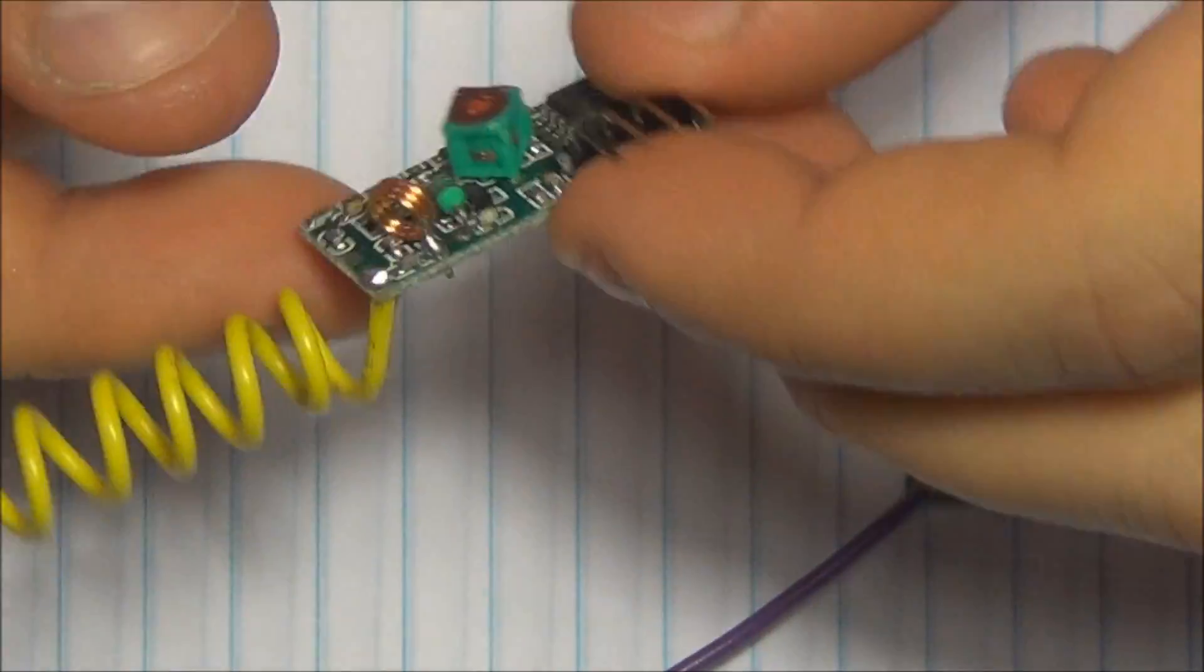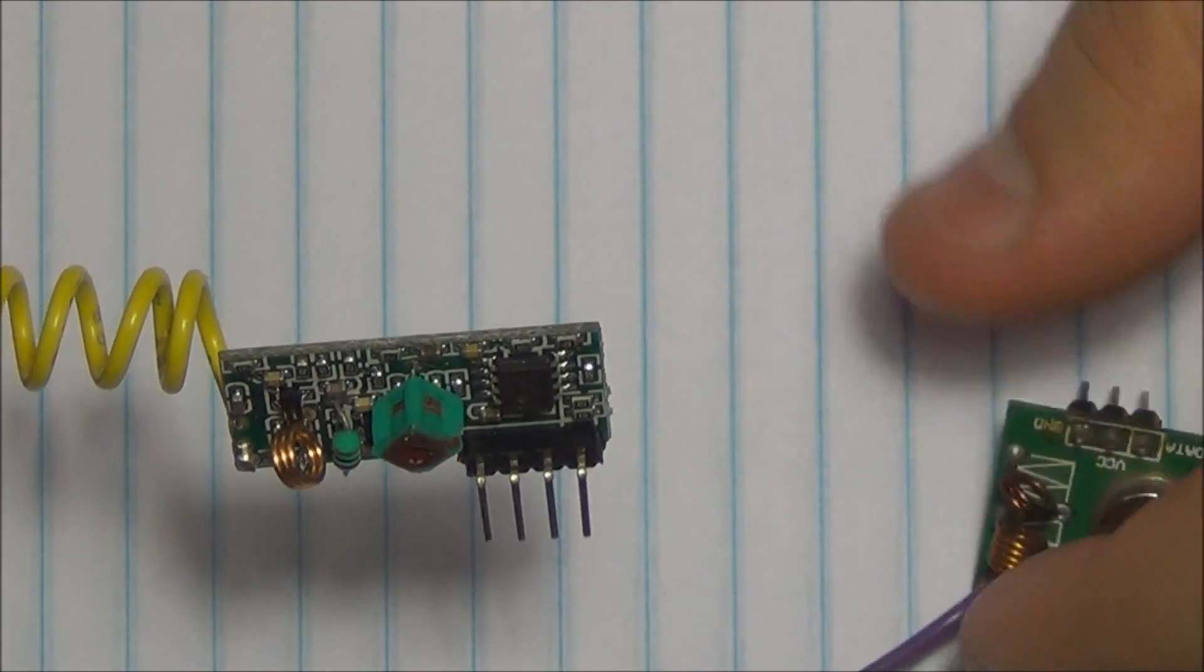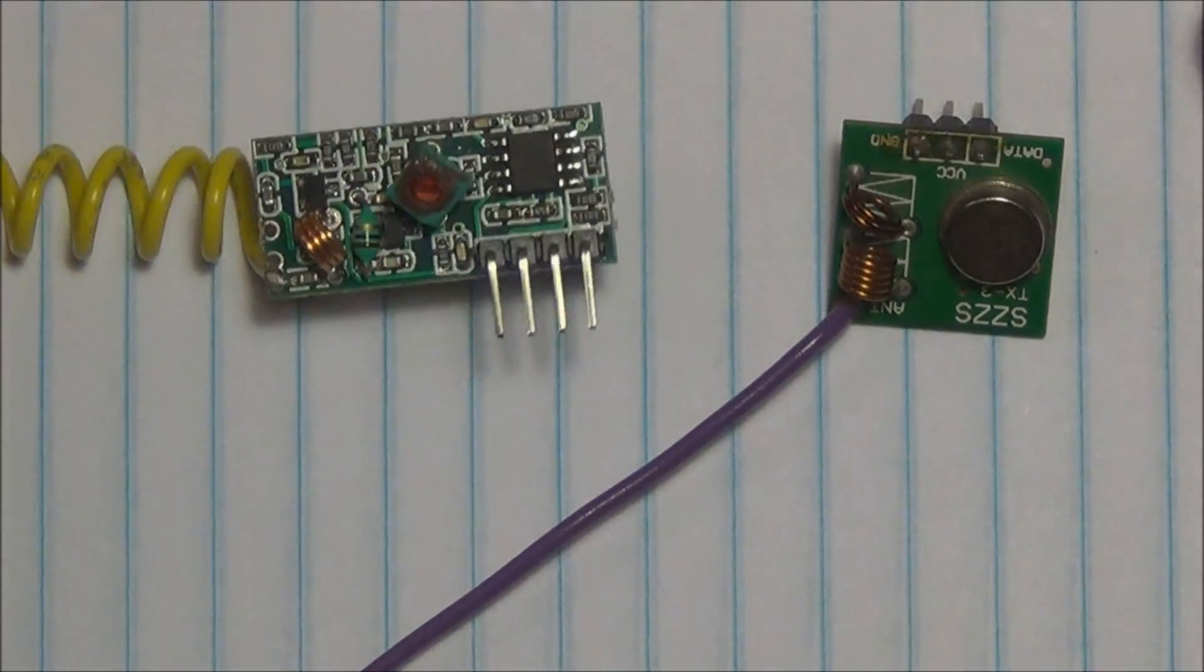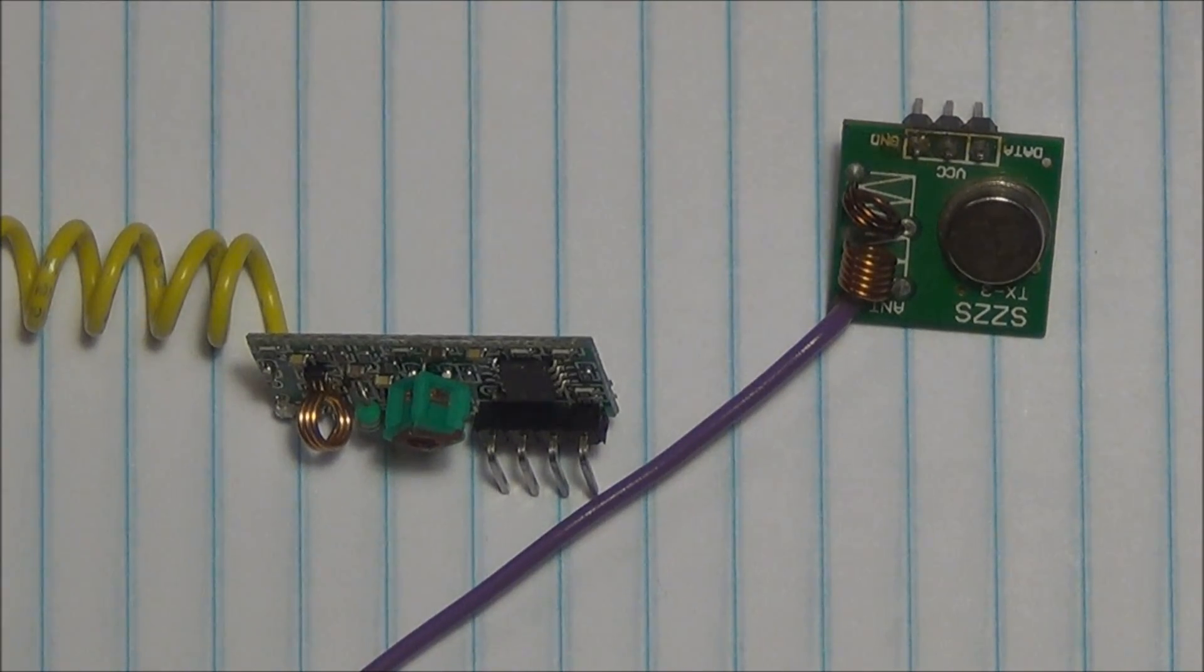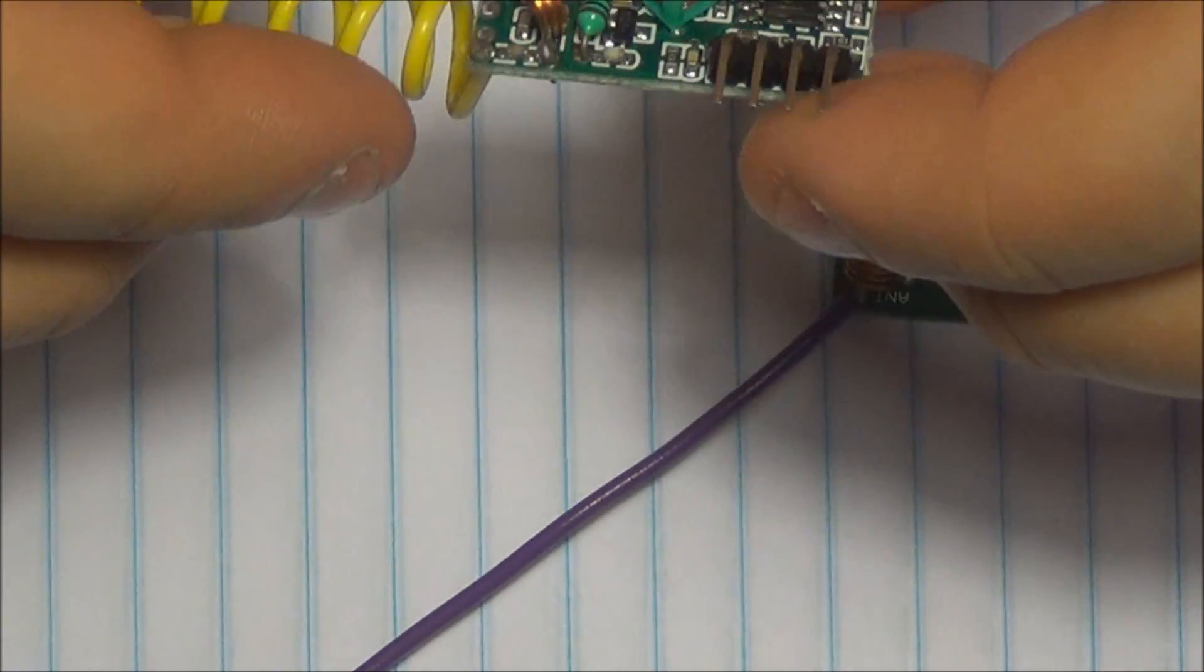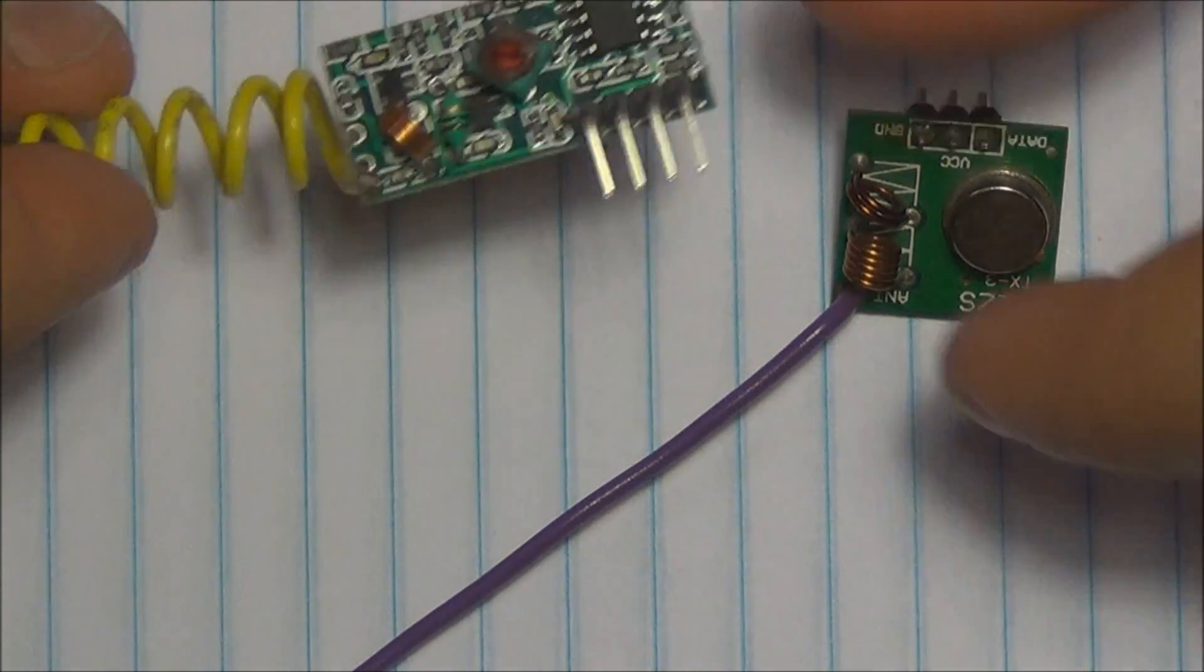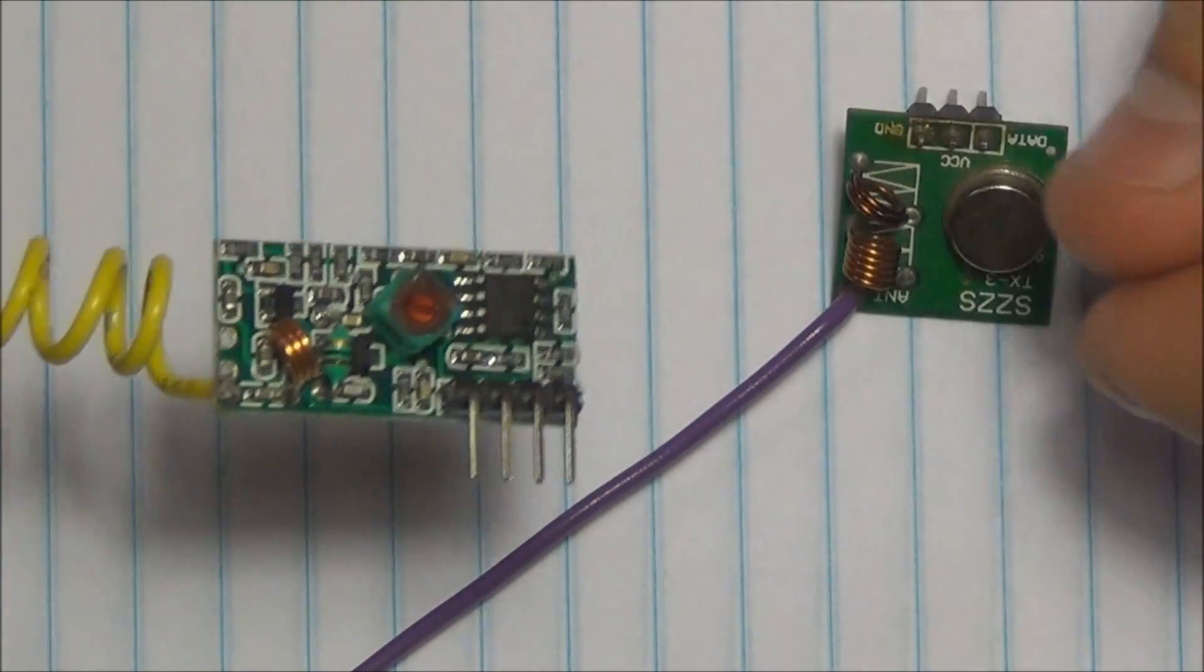So as you can see here I have my receiver and I have a transmitter. Generally you can get these anywhere from $4 to I would say $10 apiece depending on where you shop. Some of them have different frequencies, some of them have adjustable frequencies but mine are 415 MHz.